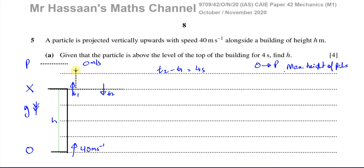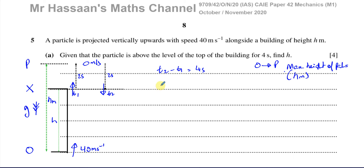The 4 seconds is going to be divided into two equal parts because it's under constant acceleration. The acceleration will decelerate it, then it will start accelerating again and come back down to this level. So for 2 seconds it's going above the building level, and for 2 seconds it's coming back down. Now let's consider from O to P and write down what we know from SUVAT. We're taking up as positive because it's projected upwards, and taking O as the starting point.